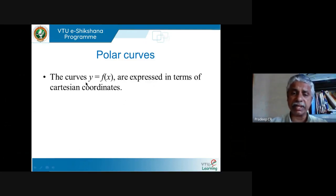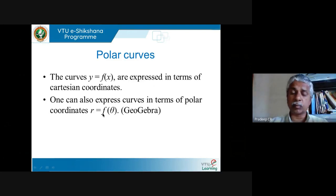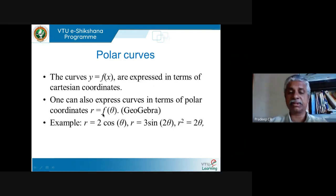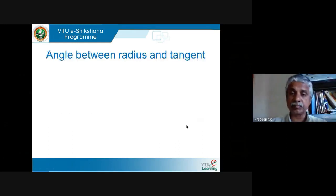We also saw examples of polar curves. Like Cartesian curves where we express y in terms of x, in polar curves we express r in terms of θ — basically a relation between r and θ. Examples include r = 2cosθ, r = 3sin(2θ), r² = 2θ, r = 2 (a circle), and θ = π/3 (a straight line).